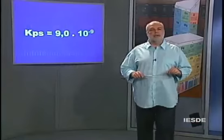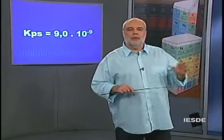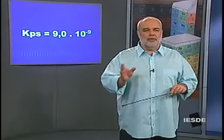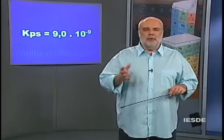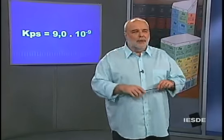Os valores de KPS são tabelados. Você pode consultá-los em livros que chamamos pelo nome em inglês de handbook — teoricamente 'livro de mão', mas eles são grossos como um catálogo telefônico. São depósitos de dados extremamente úteis. Você pode ver o KPS de qualquer composto: do mármore, carbonato de cálcio, e de qualquer outro sal ou hidróxido que interesse a você.